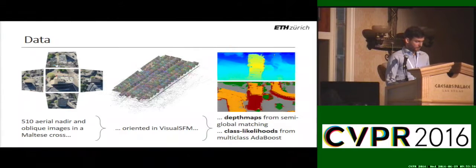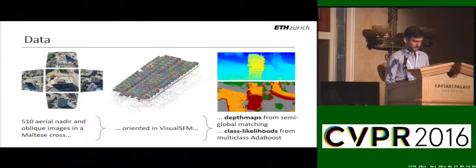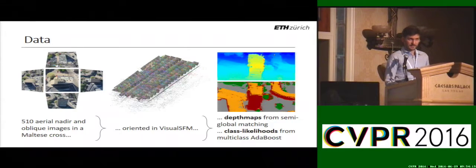The data consists of more than 500 aerial images combining both oblique and nadir views in a Maltese cross configuration. The images are oriented, and depth maps are calculated from semi-global matching and class likelihoods from a multi-class data boost. Depth maps and class likelihoods go in as input data into our algorithm.